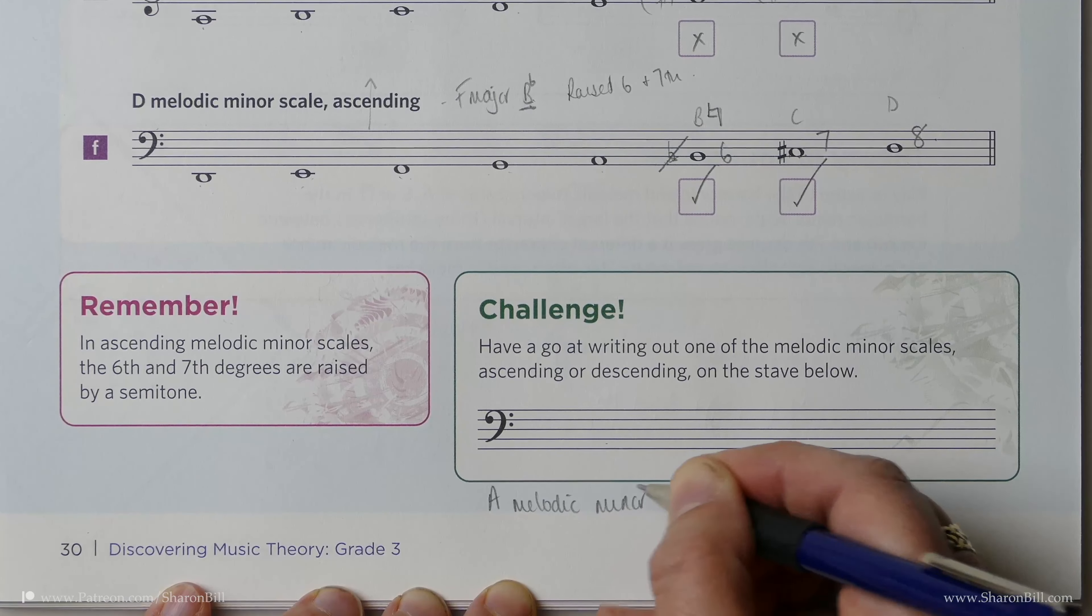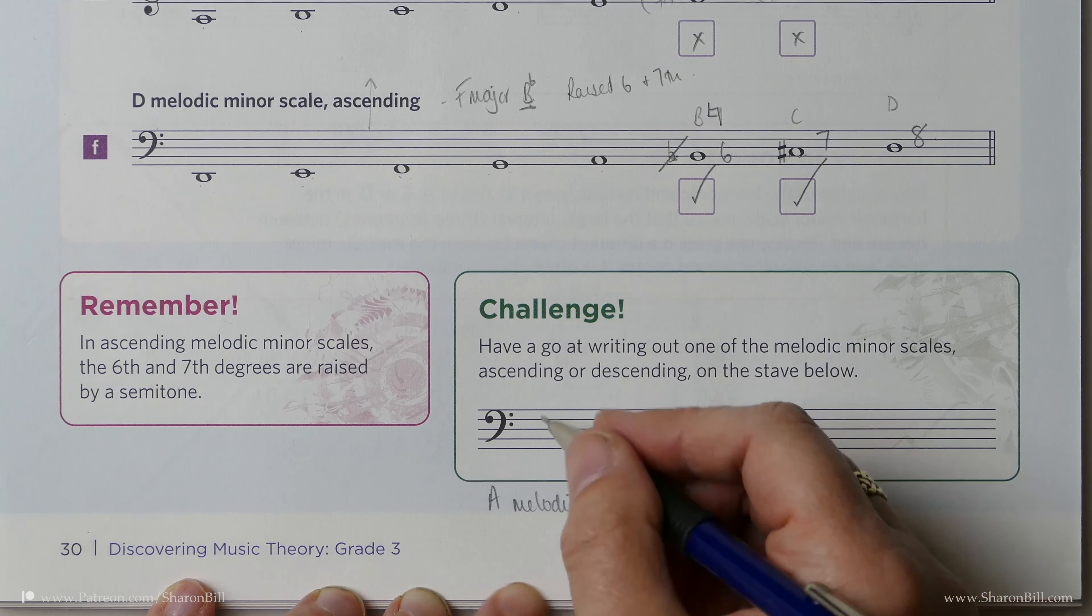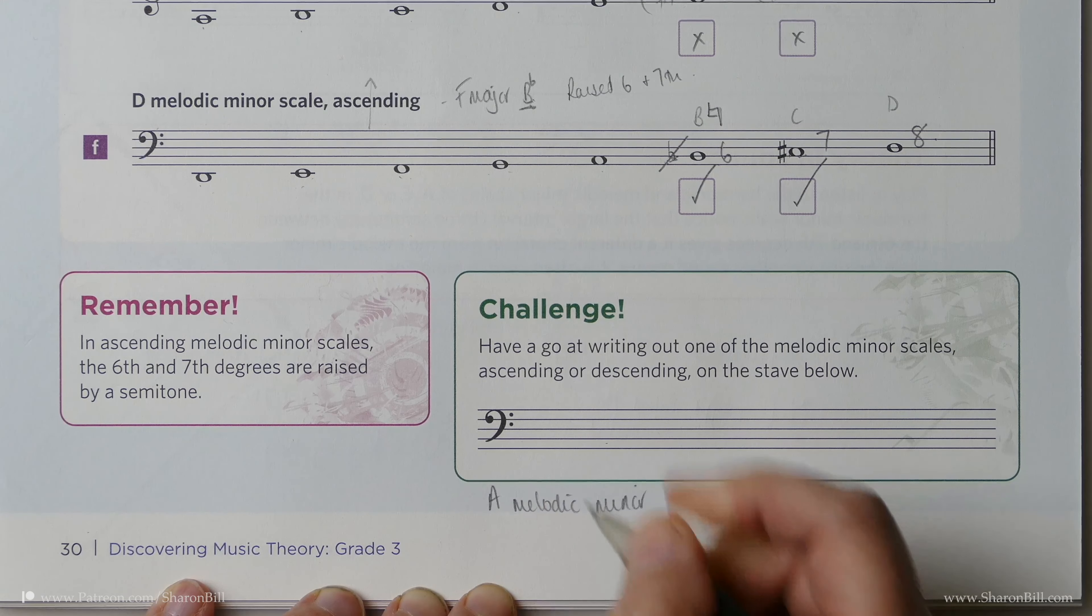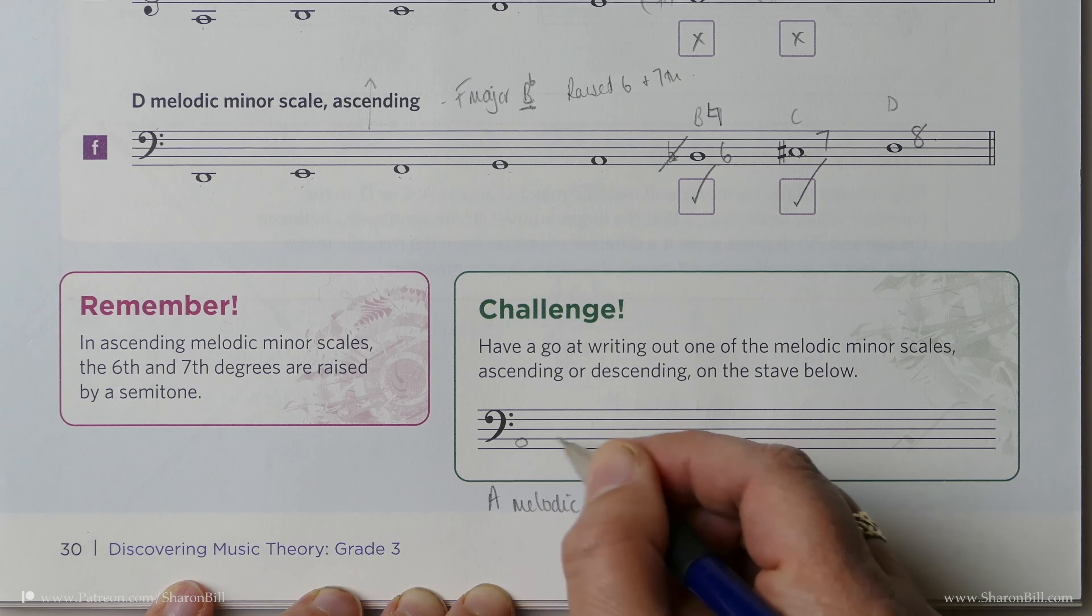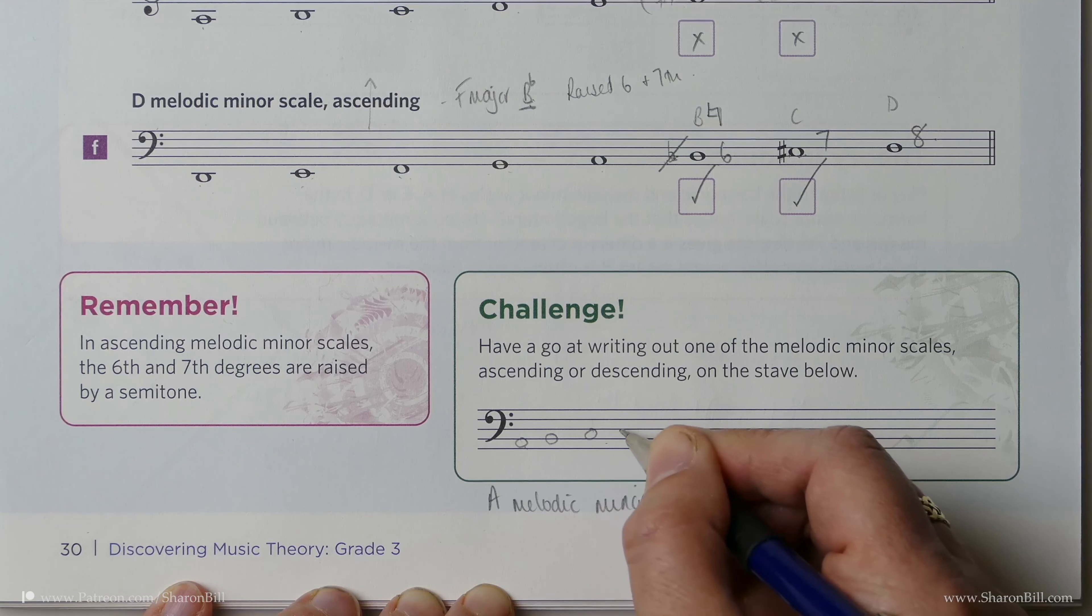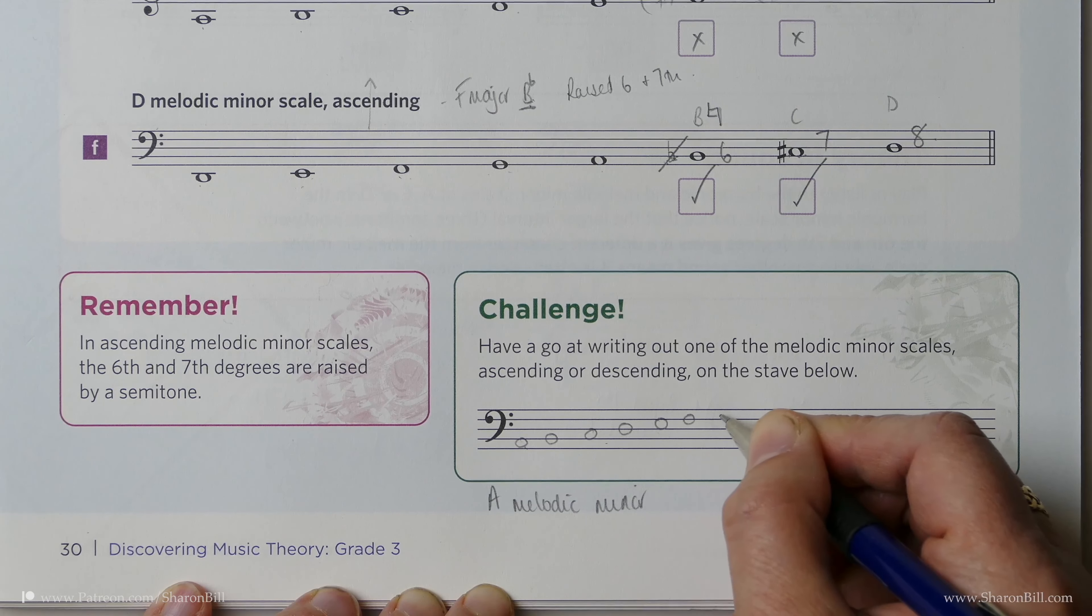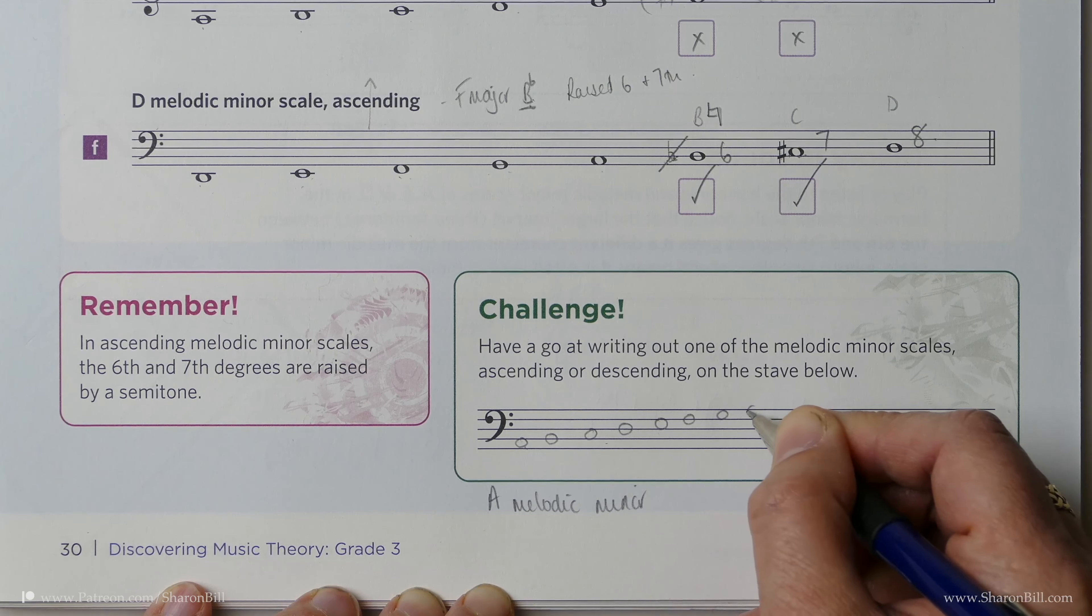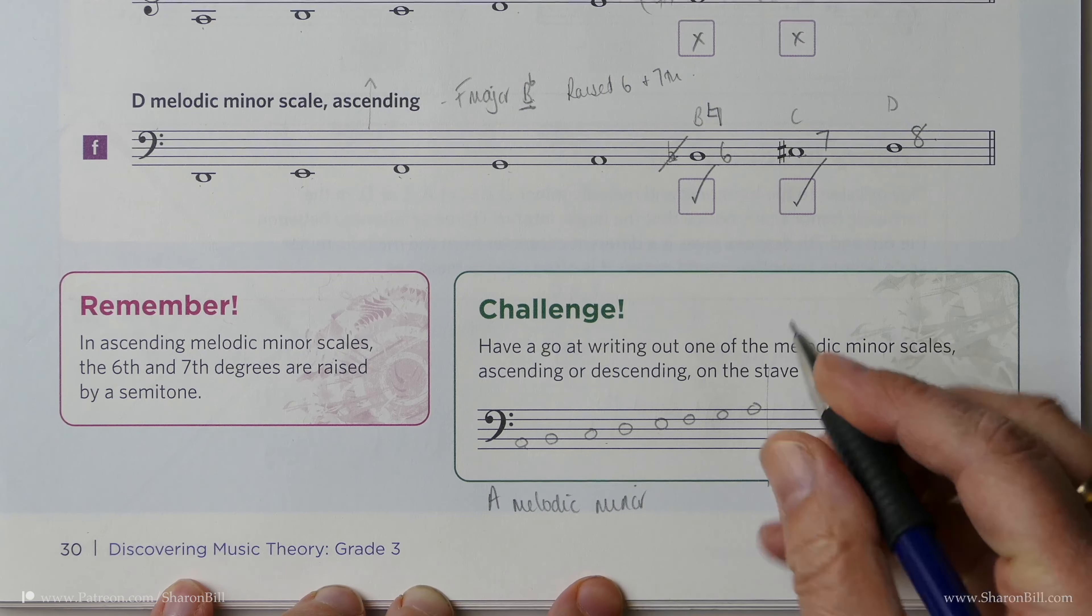And just because I can, I'm going to go ascending and descending. So if we start, I'm just going to use semi-breves and I don't have to worry about stems. So starting on bass clef A: one, two, three, four, five, six, seven, eight. So that's the ascending version.